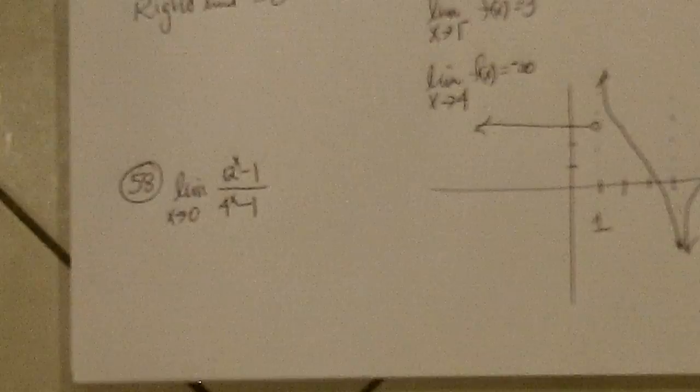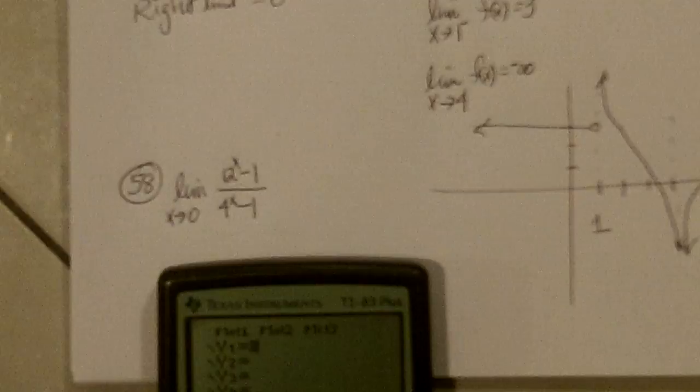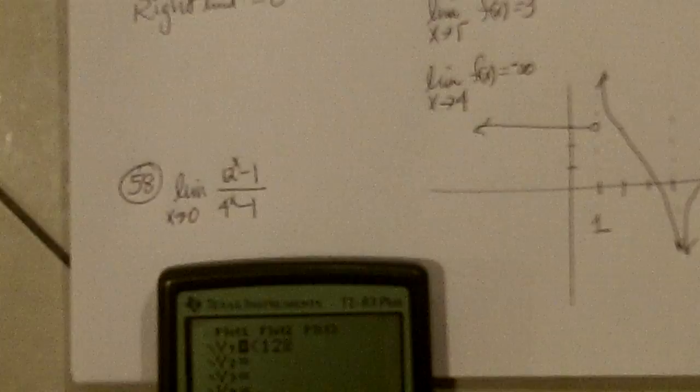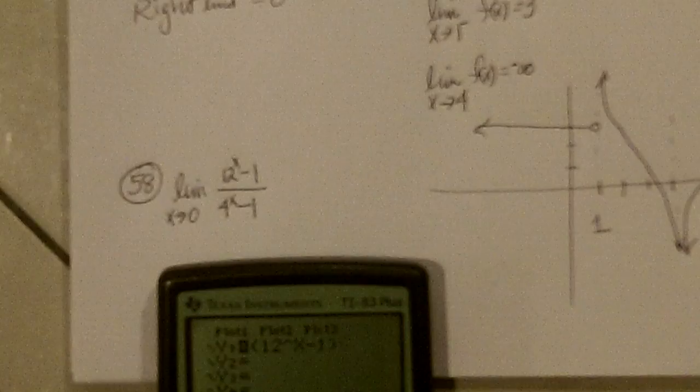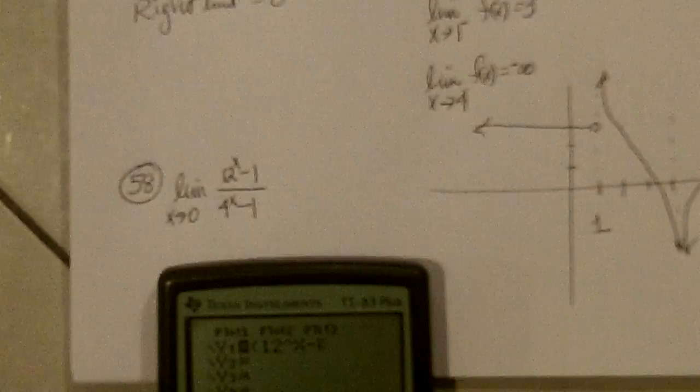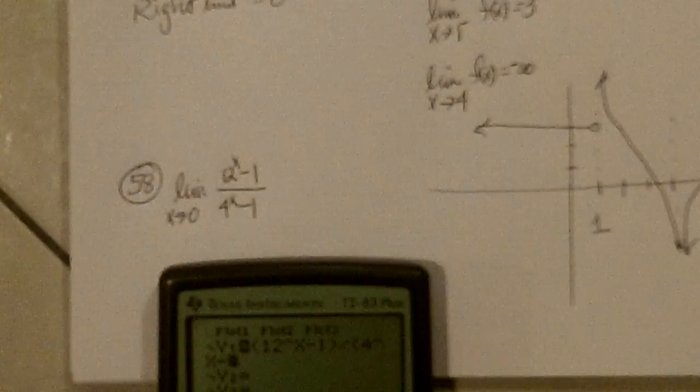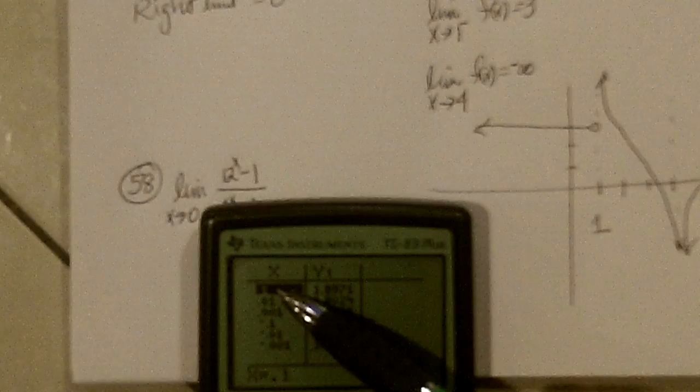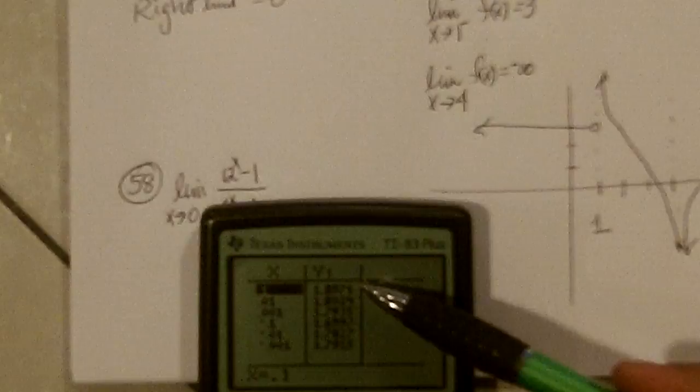Okay, 58. They say, look at this with the calculator, use numbers close to 0, and look at this one. So, I'm going to go to Y equal and clear, and we're going to put in parenthesis 12 to the X minus 1, close parenthesis, divided by parenthesis, 4 to the X minus 1, close parenthesis. And second table,